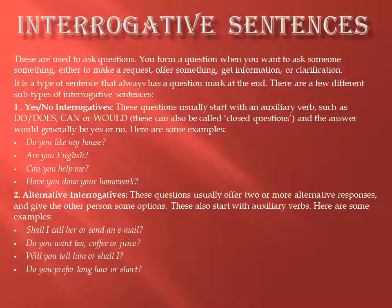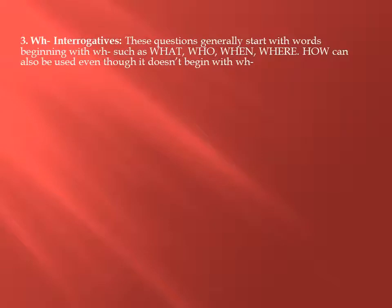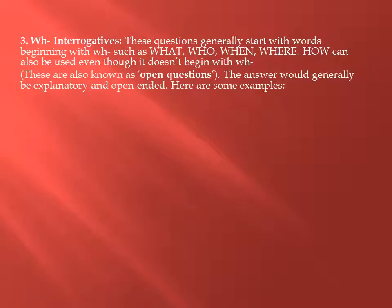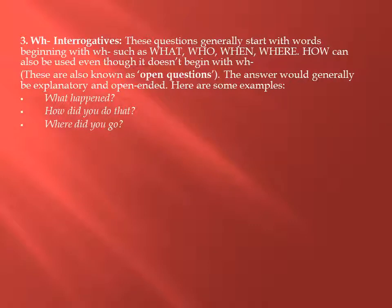Now we will be studying the third and the fourth. The third one is WH interrogative. These questions generally start with words beginning with WH such as what, who, when, where. How can also be used even though it doesn't begin with WH. These are also known as open questions. The answer would generally be explanatory and open-ended. Here are some examples: What happened? How did you do that? Where did you go? What are you doing?